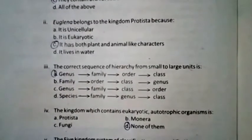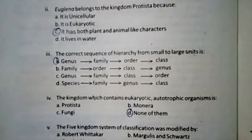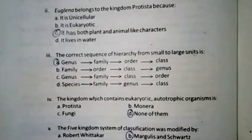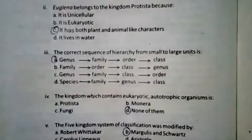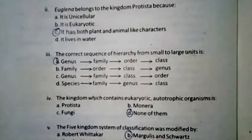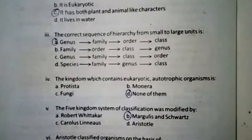The five-kingdom system of classification was modified by B — Margulis and Schwartz. Question six: Aristotle classified organisms on the basis of habitat, cell structure, morphology, or anatomy. The right option is habitat.